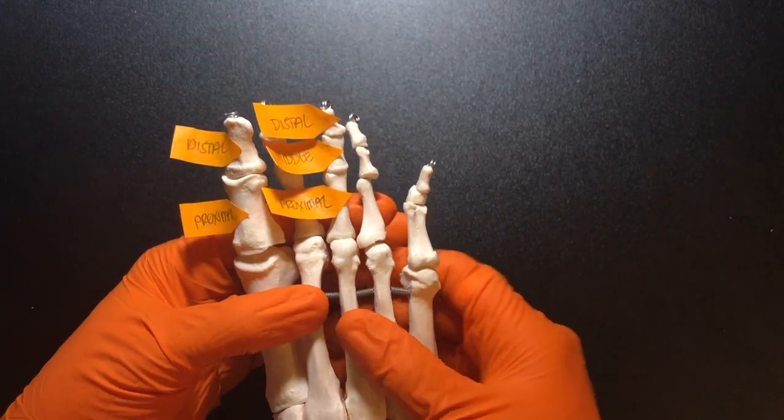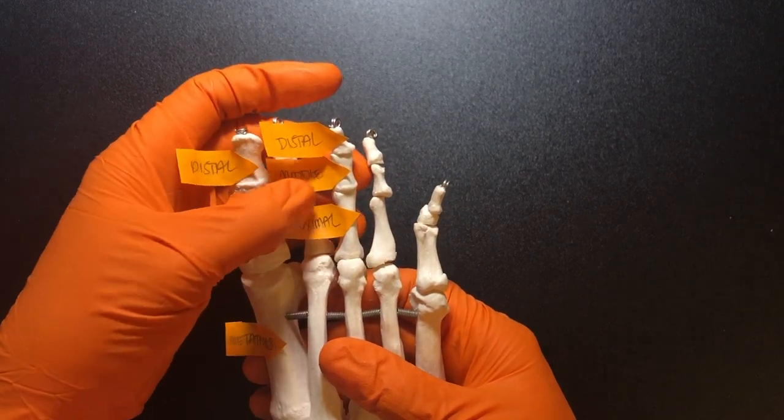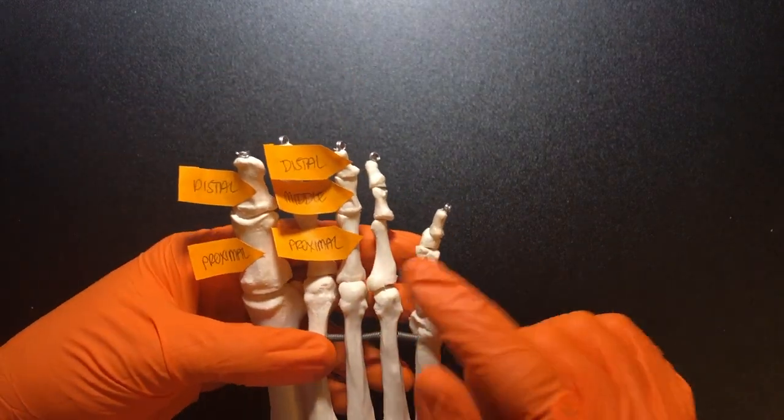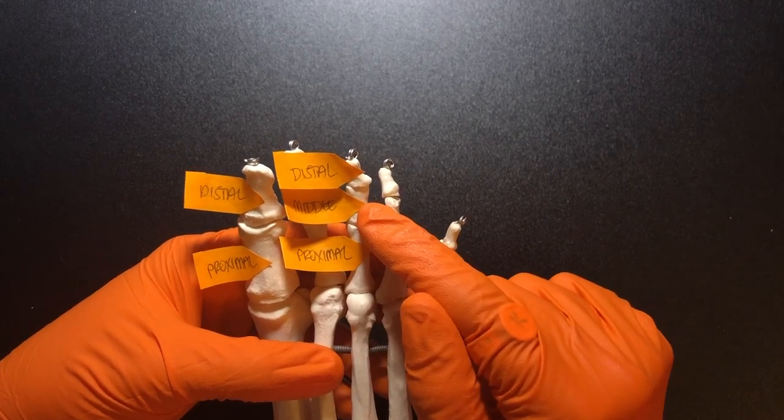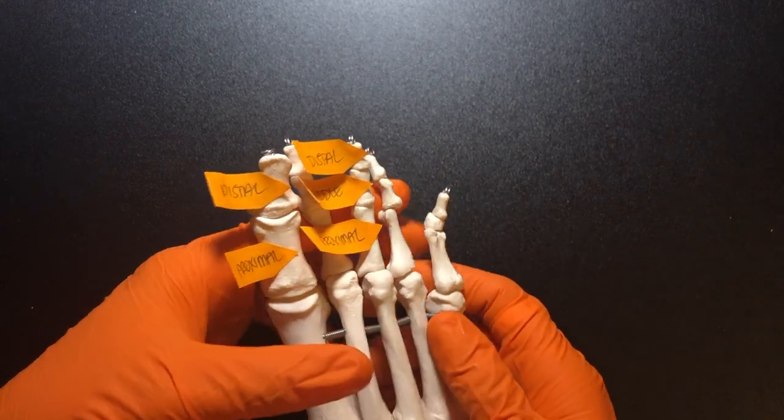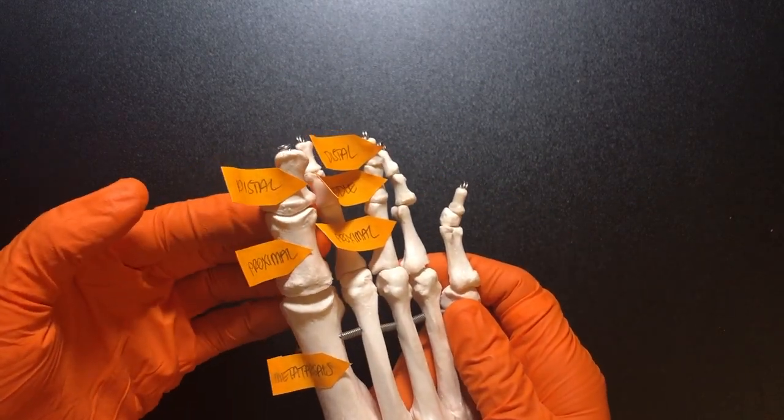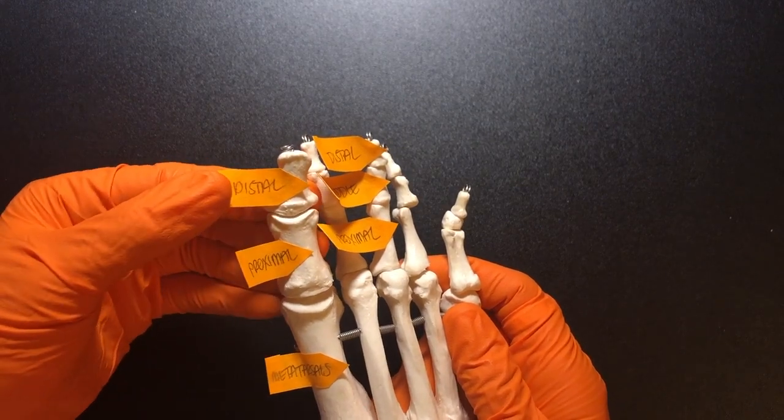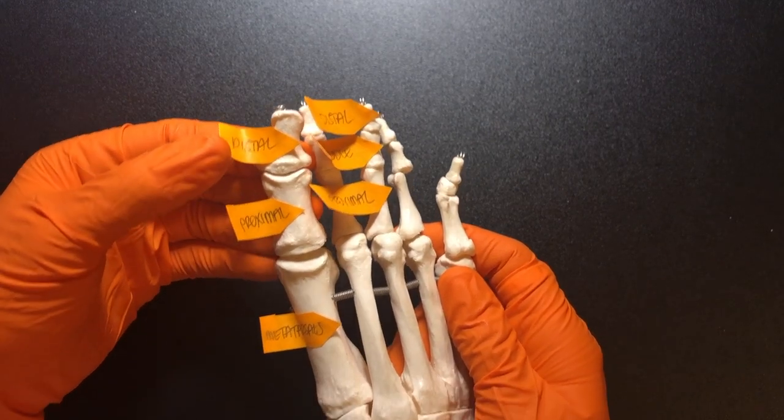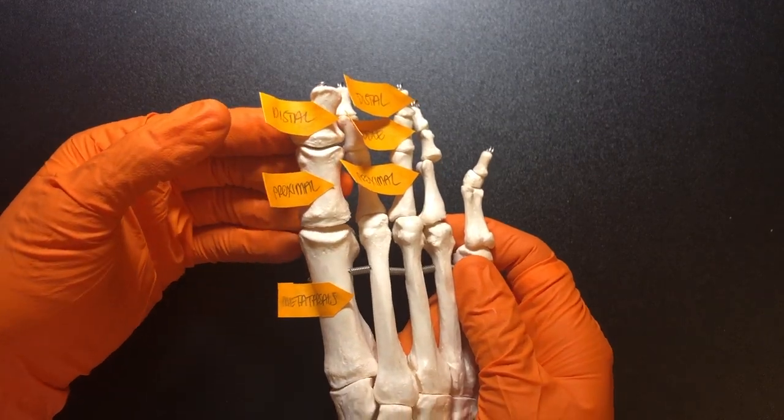And then very similar to what we saw with the phalanges, we have a proximal, middle, and distal, except in the great toe or the hallux. We only have a proximal and distal phalanx.